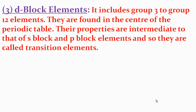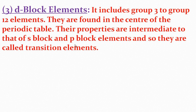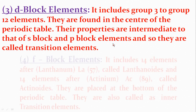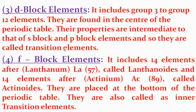The D block elements include Groups 3 to 12, found in the center of the periodic table. Their properties are intermediate to those of the S block and P block elements, so they are called transition elements, as this D block has the properties of both S block and P block elements, and is therefore placed in the center of the periodic table.